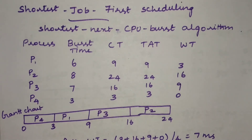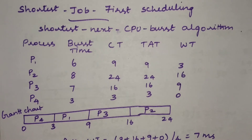Hello everyone. In this video we will discuss Shortest Job First (SJF) scheduling. This is another scheduling algorithm where incoming processes may have different burst times. Based on the burst time, whichever process has the shortest burst time will be scheduled first — that is the concept of Shortest Job First scheduling.